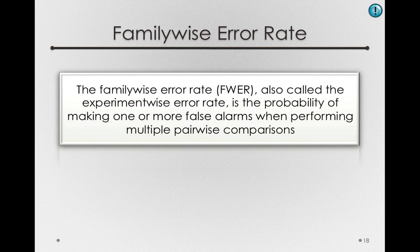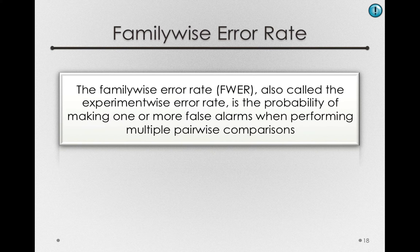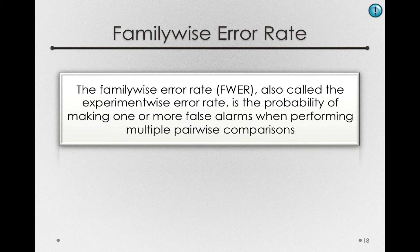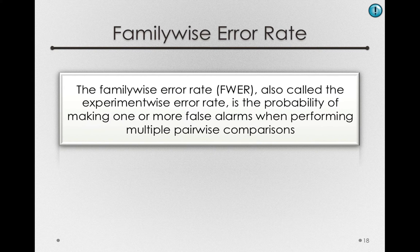What we need to consider is called the family-wise error rate, which is also called the experiment-wise error rate. This is the probability of making one or more false alarms when performing multiple comparisons.